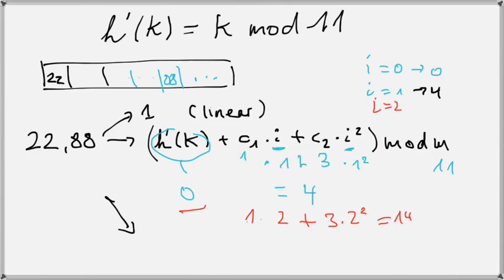That's 1 times 2, plus i squared, which is 2 squared equals 4, so I get plus 3 times 4. So I get 0 plus 2 plus 12, which is 14. 14 mod 11 would be 3, so next I would try to place 88 in slot number 3.